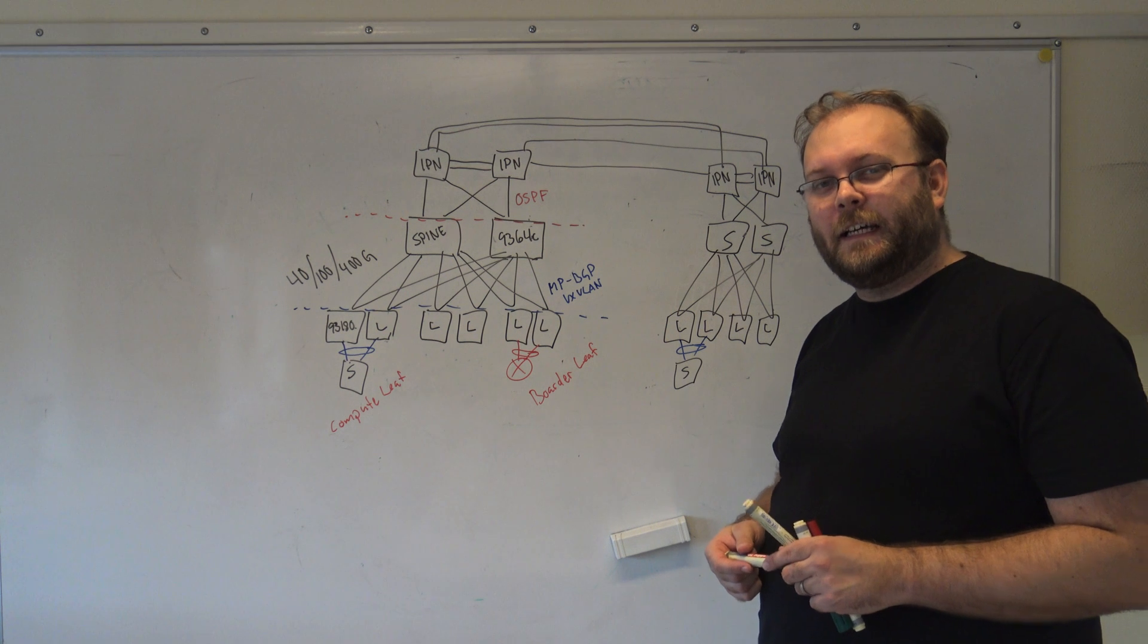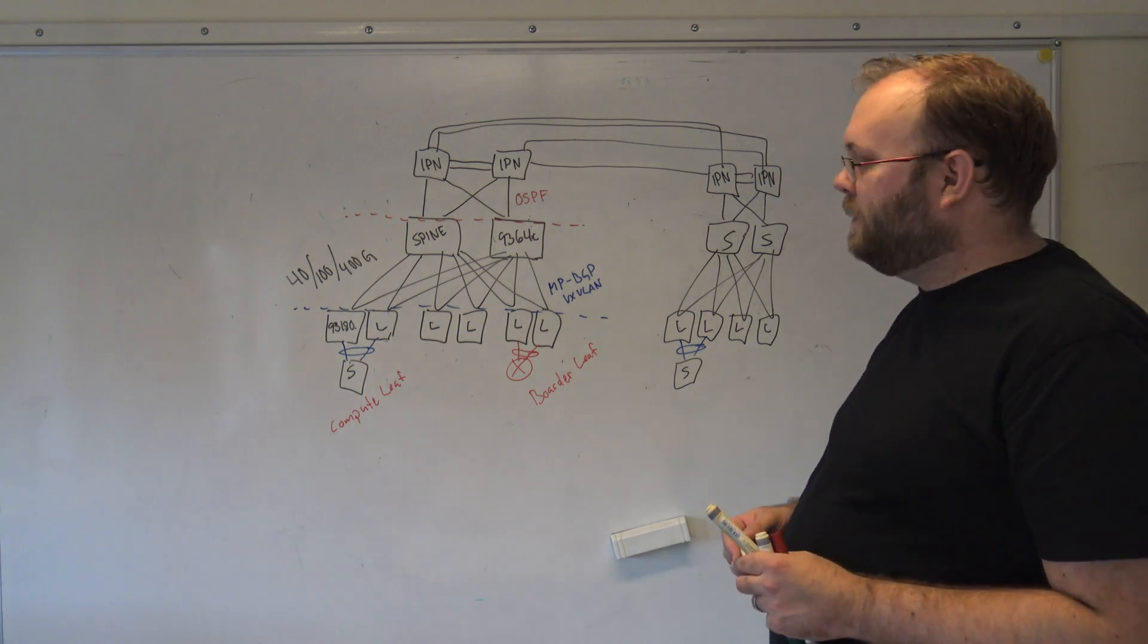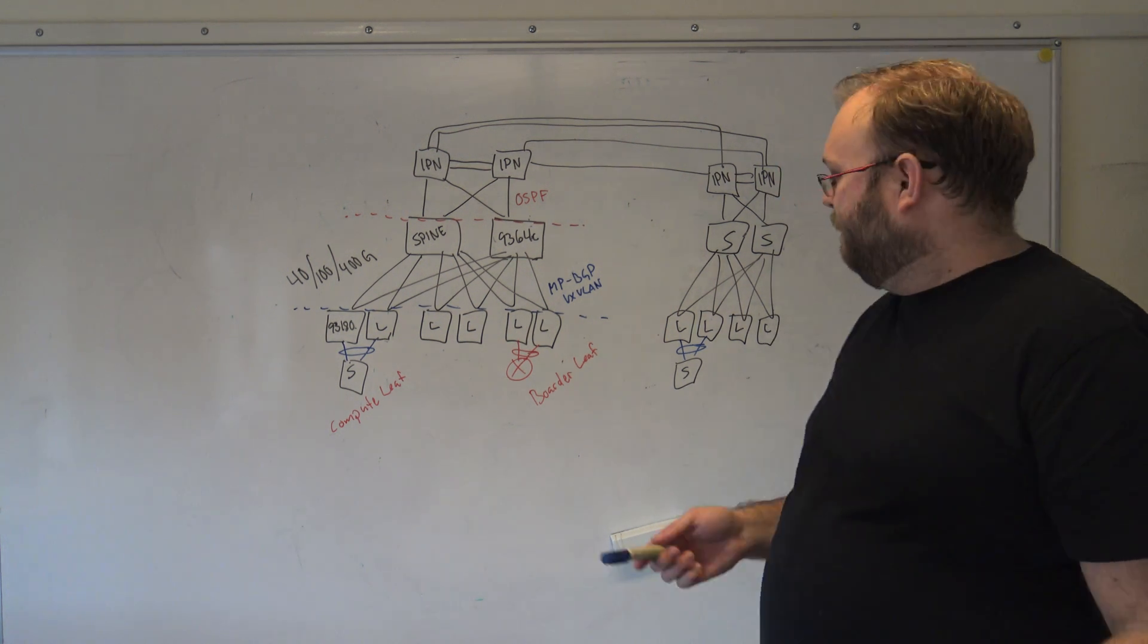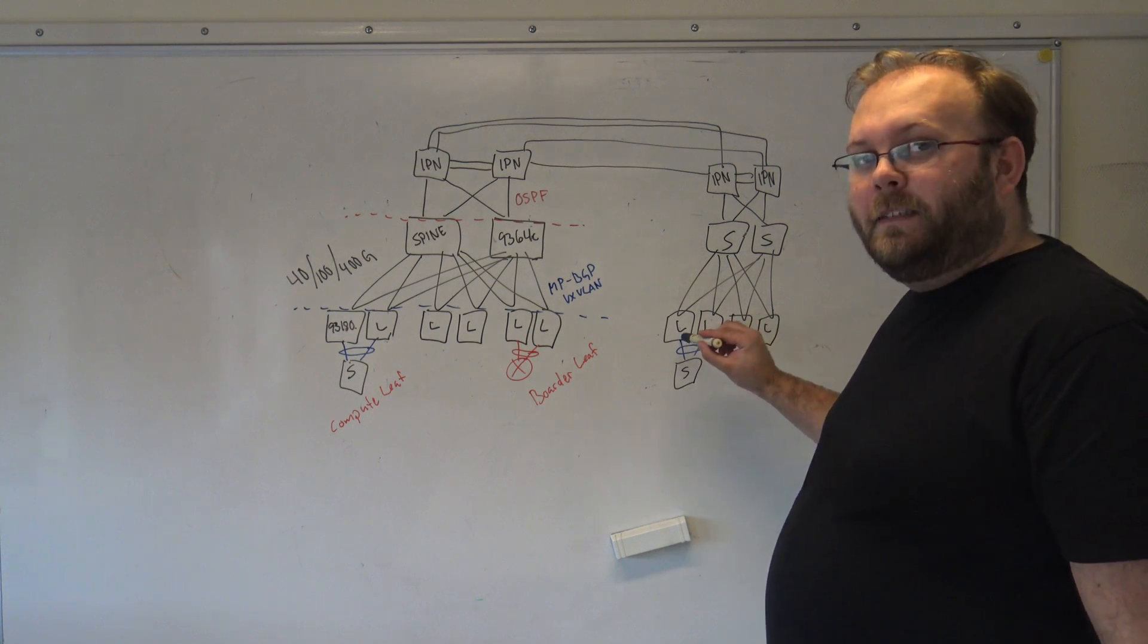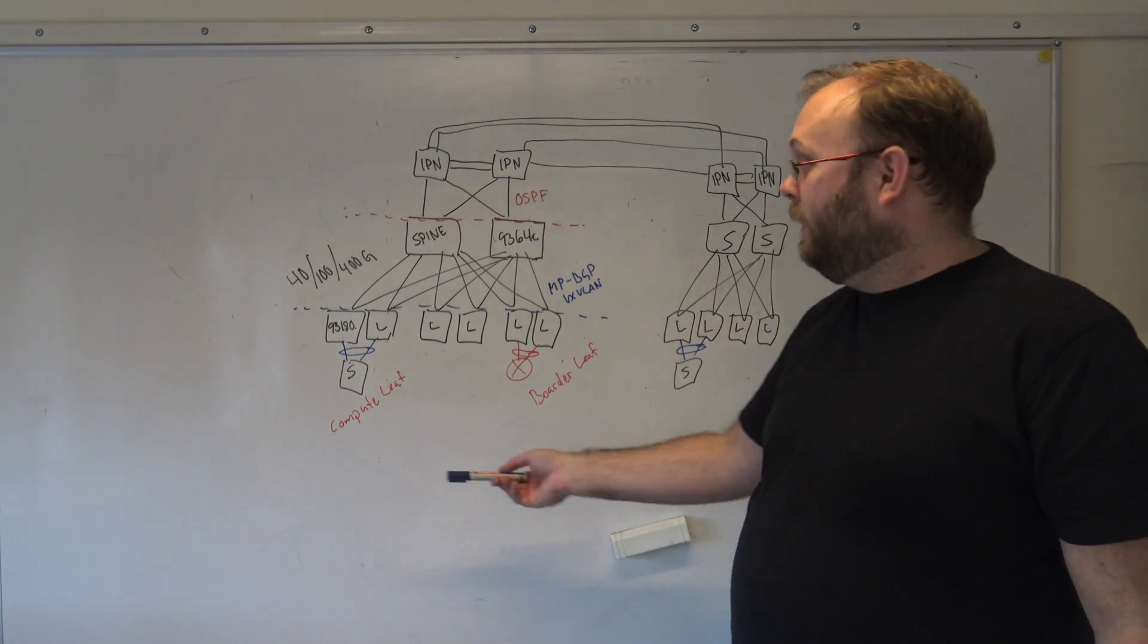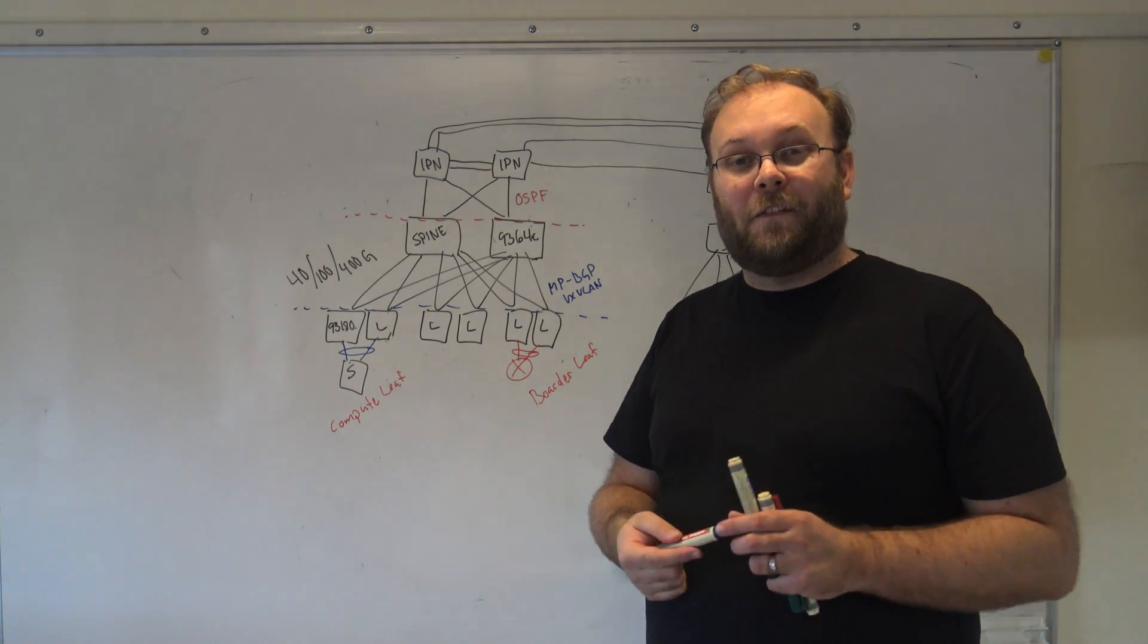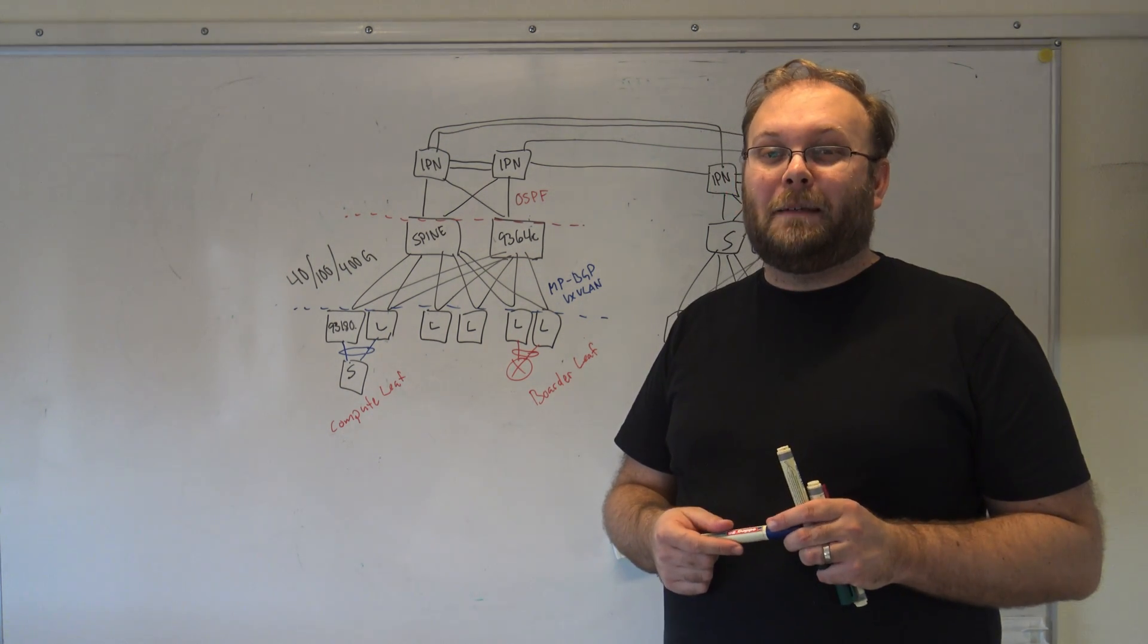Nope. ACI can make it so it encapsulates the VLAN and allows the layer 2 to be the same here in this pod as here. So you can have the same VLAN or the same EPG.